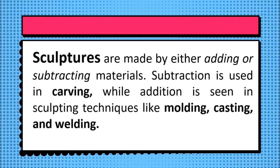Sculptures are made by either adding or subtracting materials. Subtraction is used in carving, while addition is seen in sculptural techniques like molding, casting, and welding. Contemporary art forms related to sculpture, like installations and three-dimensional manipulations such as holograms, are not easily classified as freestanding or relief, and hence are classified as contemporary art forms.